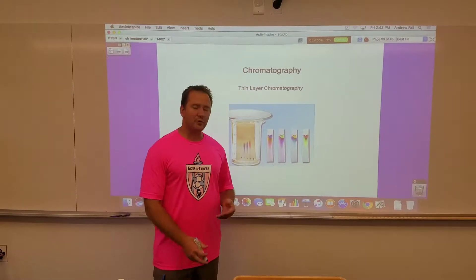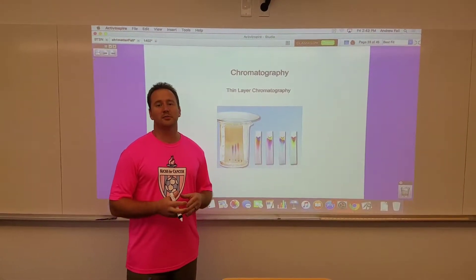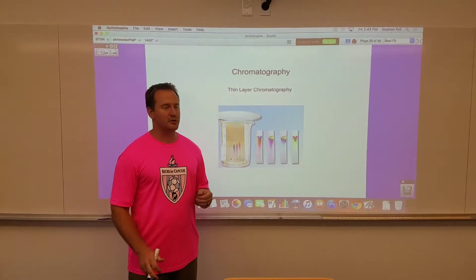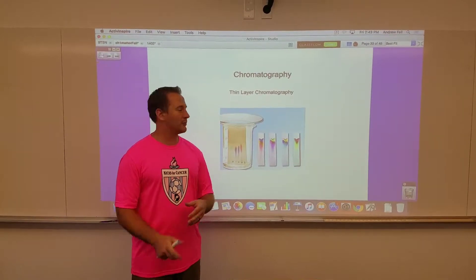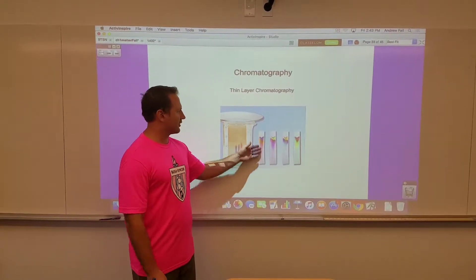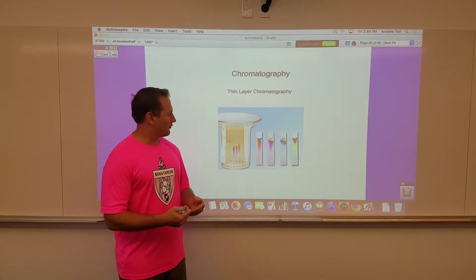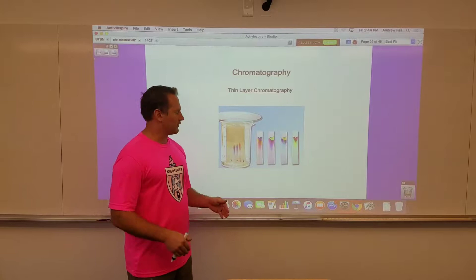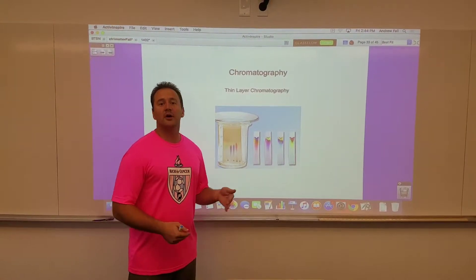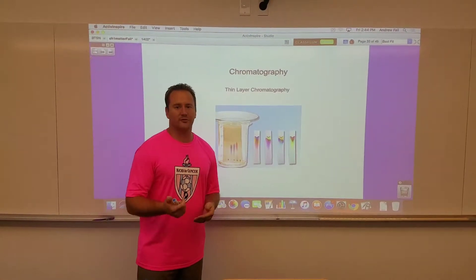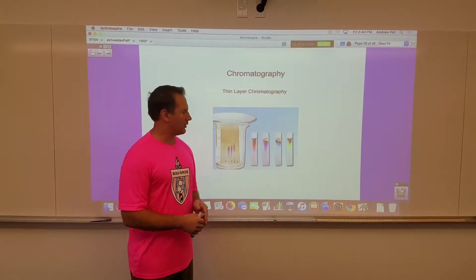The example that we did in class was to use filter paper to separate the components of a black ink mixture. Within the black ink you saw that there were a bunch of dyes, and it looked very similar to this. The mobile phase was the water that was traveling across the filter paper, and the stationary phase was just the paper.